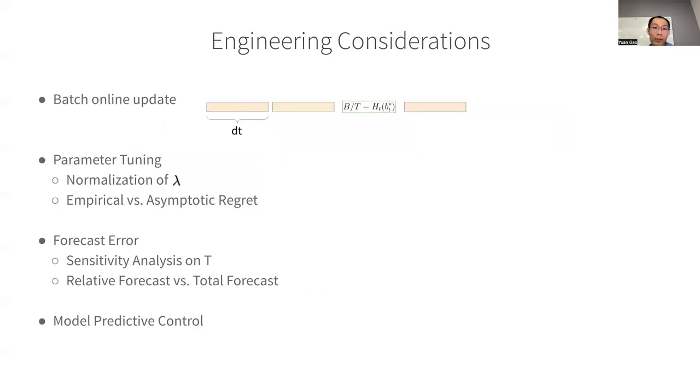Next, I will talk about several important practical considerations in implementing the bidding agent. Regarding the online update, in practice, we employ a batch version of the online update, where lambda is updated every interval dt. The update in lambda depends on the difference between the allocated budget in the time window and the expected spend.